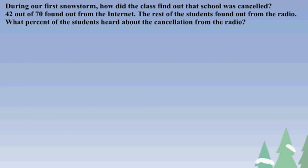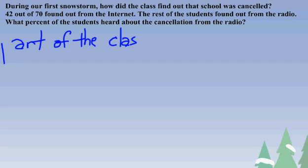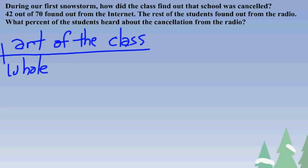Now that we've estimated, let's find the actual answer. First, I take the fraction that found out from the Internet: 42 out of 70, part to whole. Next, I subtract 70 minus 42 to find out the number of children that heard from the radio. Then I take 28 and put it over 70, part to whole.